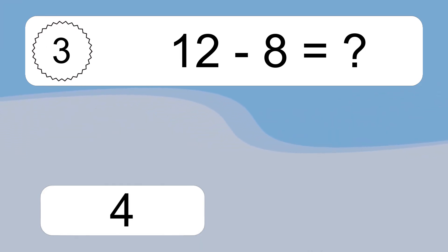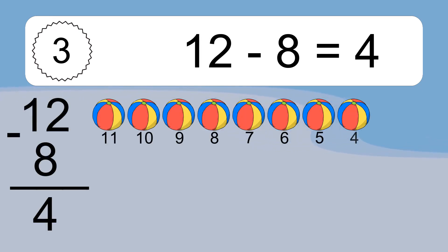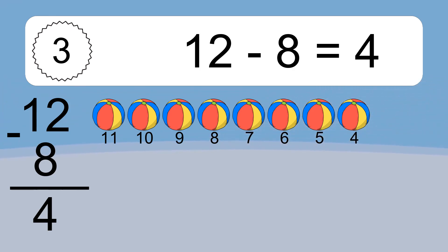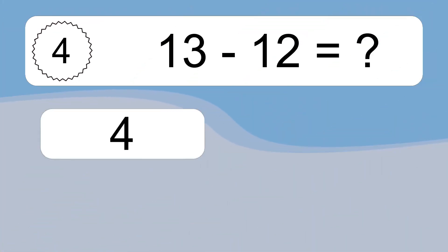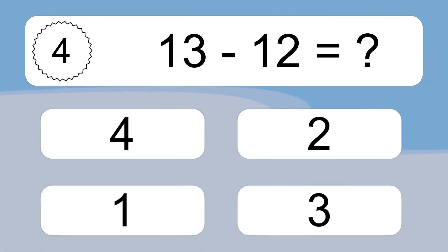12 minus 8 equals what? 12 minus 8 equals 4. Let's count it: 11, 10, 9, 8, 7, 6, 5, 4.